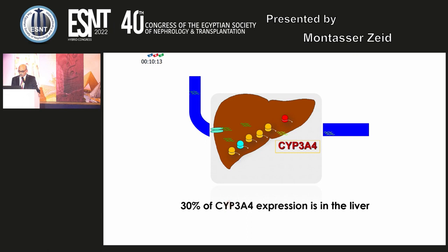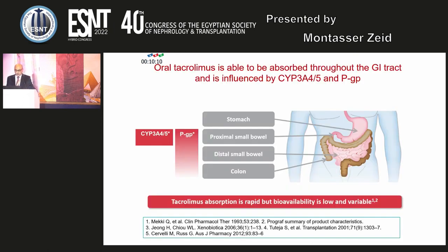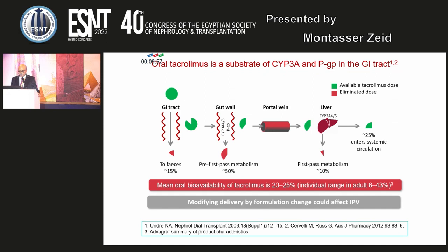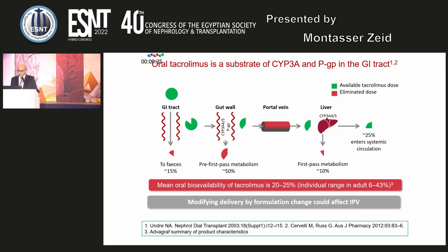About 30% of CYP3A4 expression is in the liver. Oral tacrolimus is absorbed throughout the gastrointestinal tract — from stomach, proximal small intestine, distal small intestine, and colon. Tacrolimus absorption is rapid, but bioavailability is low and variable. About 15% is lost in the GI tract, gut wall pre-first-pass metabolism accounts for about 50%, first-pass metabolism in the liver for about 10%, and only 25% enters systemic circulation. Modifying delivery by formulation change could affect intrapatient variability.